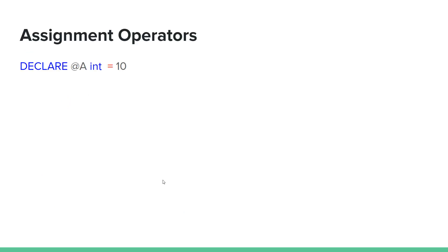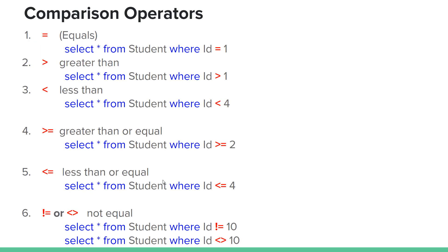The assignment operator uses equals to assign a value to a variable — it's just assignment. The comparison operator also uses equals but in a different context, like SELECT all FROM student WHERE ID equals one. In comparison, we're not assigning a value to a variable, we're comparing it.